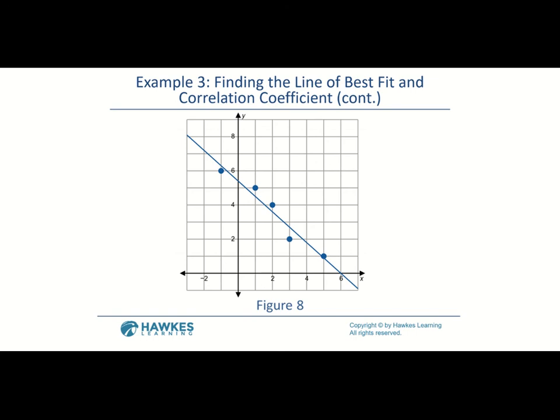The last thing we look at is the Pearson correlation coefficient R. This number tells us how close our line of best fit is to the actual data points — in other words, is this a good line of best fit? We'll use the formula on the next page to calculate it.